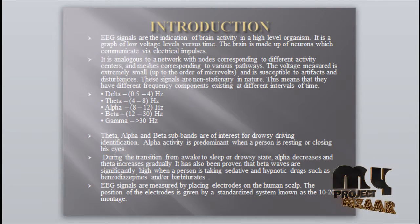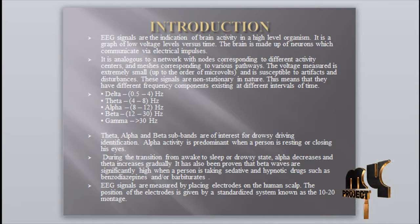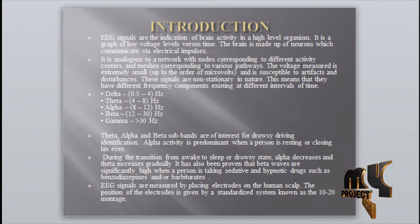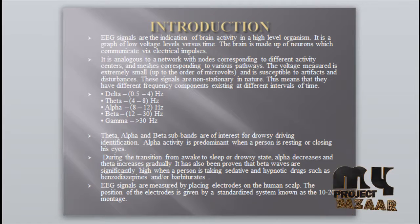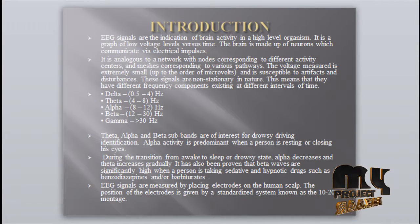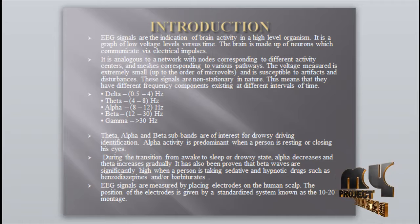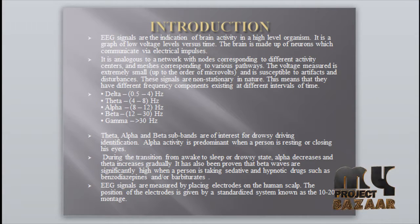In drowsy driving, alpha activity is predominant when a person is resting or closing their eyes. During the transition from an awake to a sleepy or drowsy state, alpha decreases and theta increases. Beta waves are significant at a high level when a person is talking or has taken hypnotic drugs. EEG signals are measured using electrodes placed on the human scalp in a system known as the 10-20 montage.